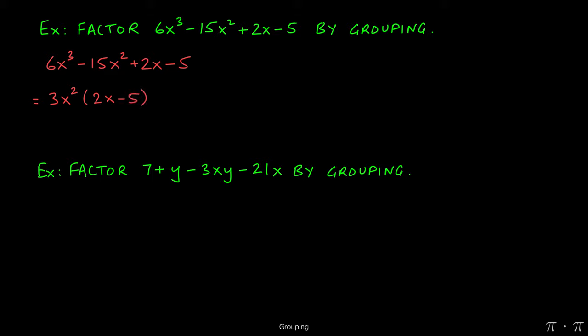Now for 2x minus 5, we can simply factor out a GCF of 1. They don't have anything else in common. Dividing 2x by 1, we just get 2x. Dividing negative 5 by 1, we get negative 5.